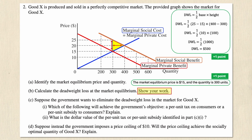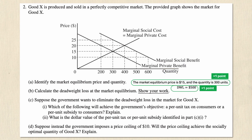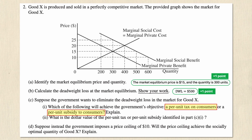Now let's solve part C. It says suppose the government wants to eliminate the deadweight loss in the market for good X — which of the following will achieve the government's objective: a per unit tax on consumers or a per unit subsidy to consumers? To answer this, we need to establish whether this is a positive or negative consumption externality by comparing the marginal private benefit curve and the marginal social benefit curve.